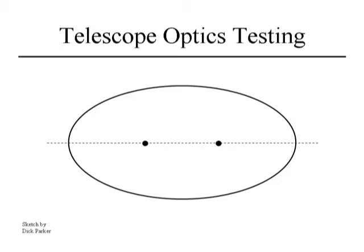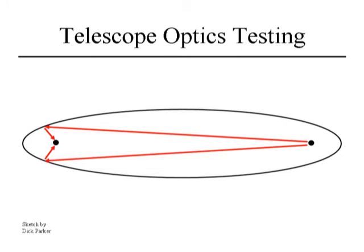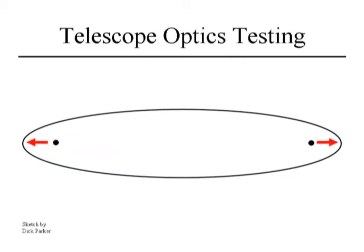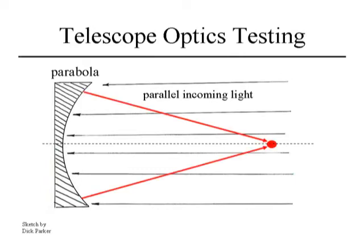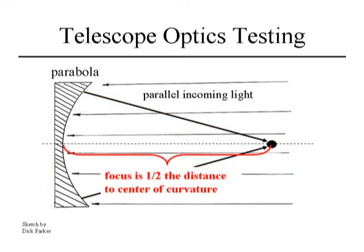Let's stretch that ellipse further. You get a very long ellipse, and the principle still holds — light at one focus reflects to the other. I can keep stretching the ellipse, getting the foci farther and farther apart. If I go far enough, I reach a unique case where the foci are an infinite distance apart. If they're infinitely apart, the light coming from one focus is going to be a parallel bundle, and this surface becomes a parabola. A parabola means that light coming from a parallel source will focus to one common point, at half the distance of what the center of curvature of the equivalent sphere would be.